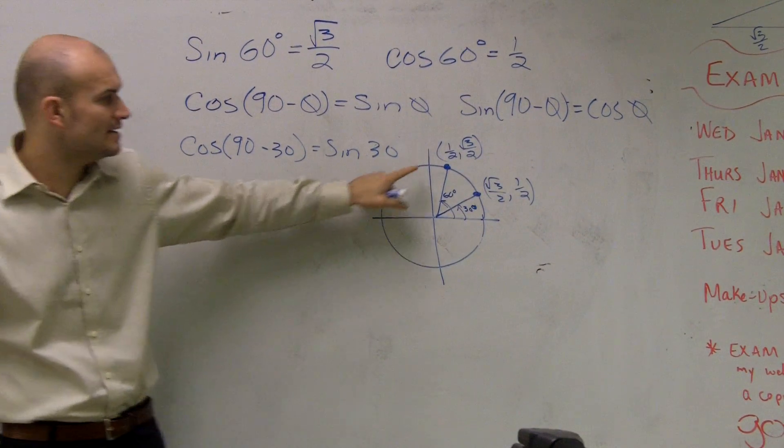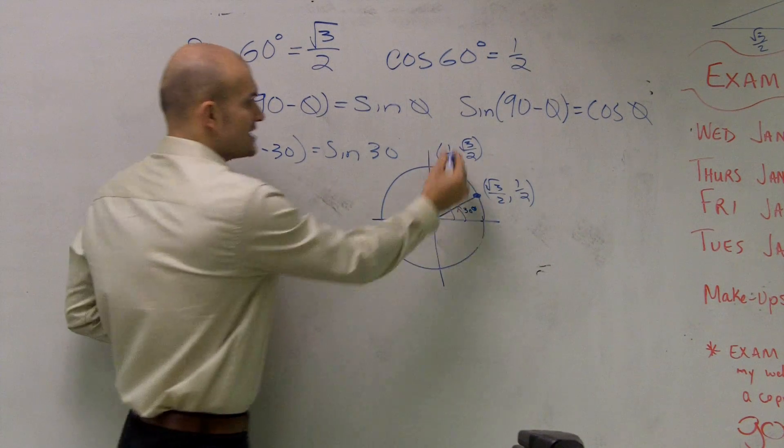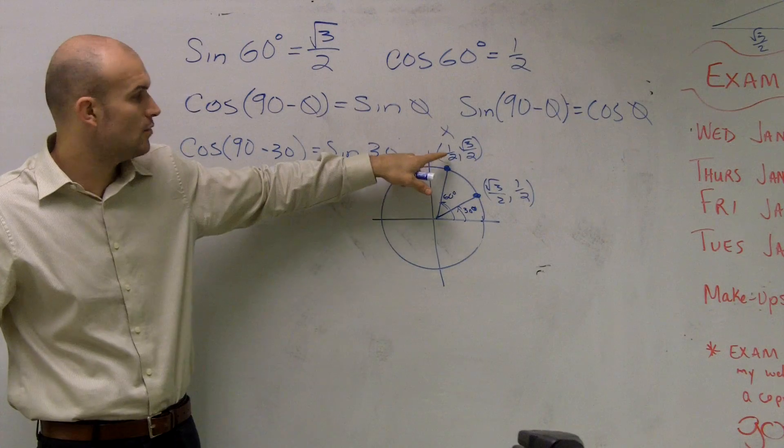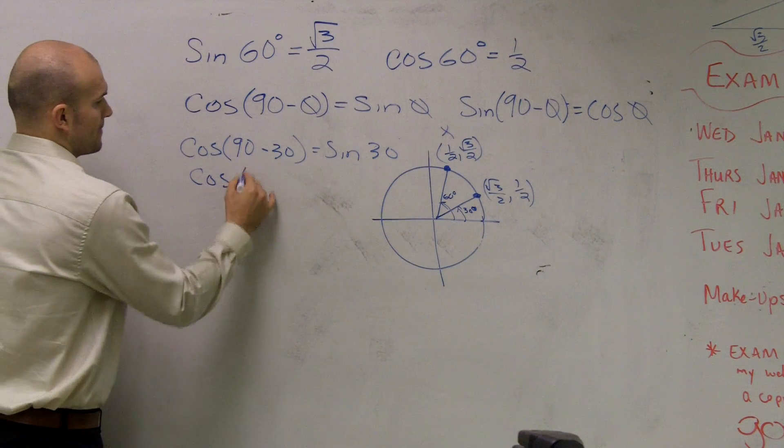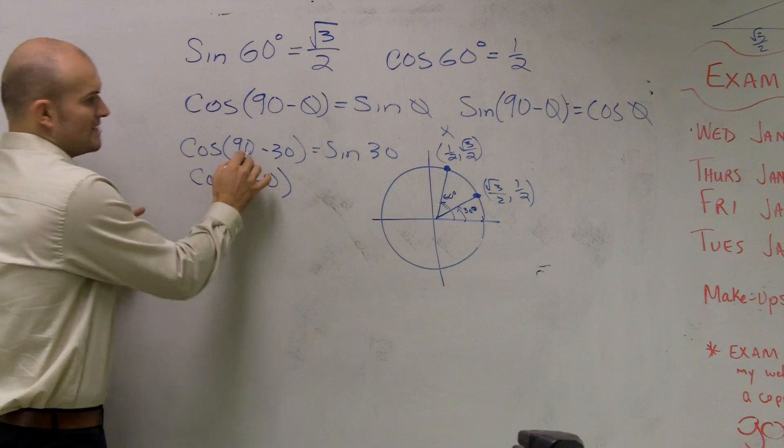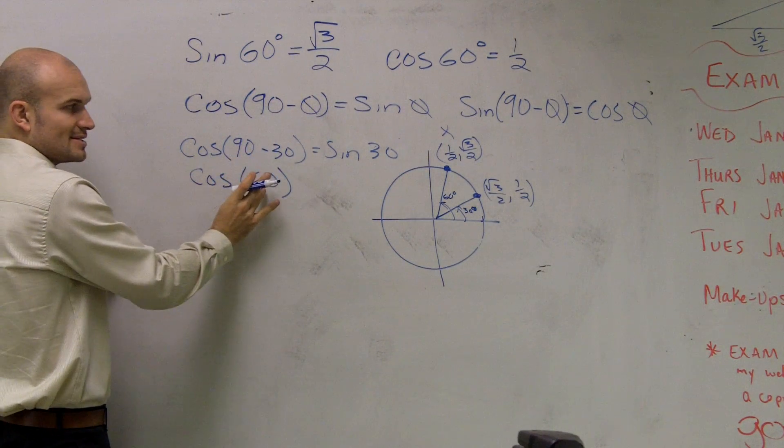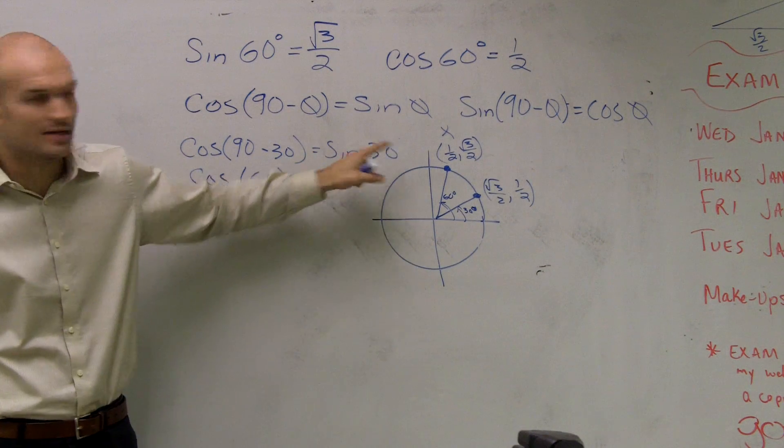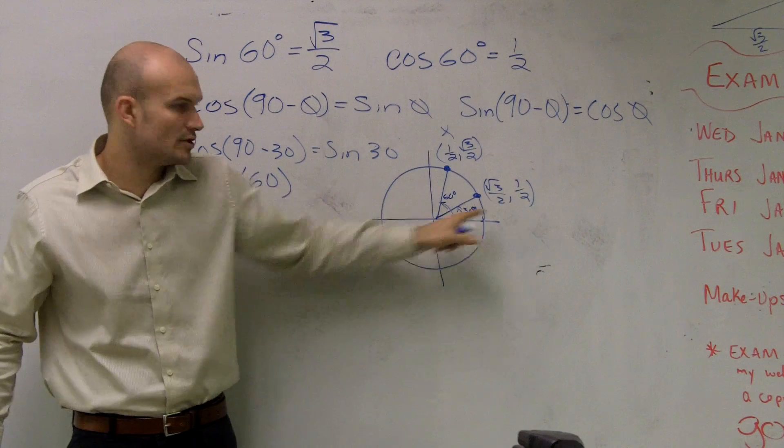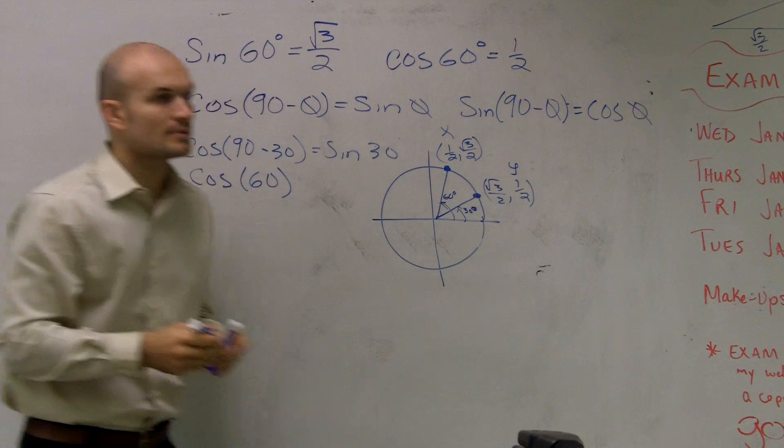Cosine is your x value, right? The x value of this point is 1 half. And I said the cosine, 90 minus 30 is 60. That's the same thing as cosine of 60 degrees. Cosine of 60, we just said, is the same as sine of 30. What is the sine of 30 degrees? 1 half. OK?